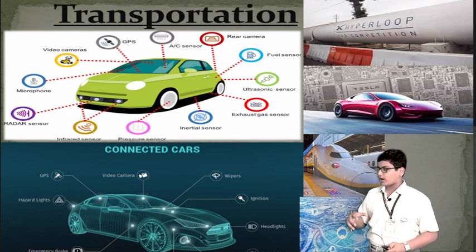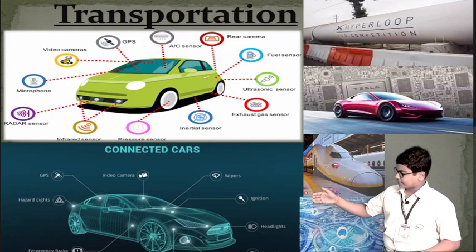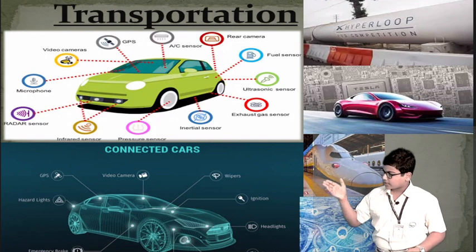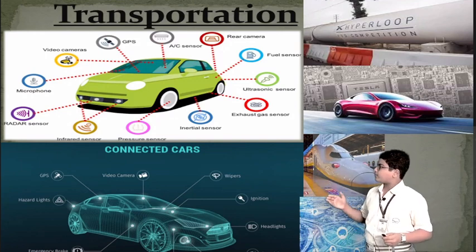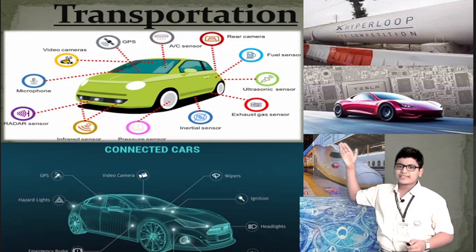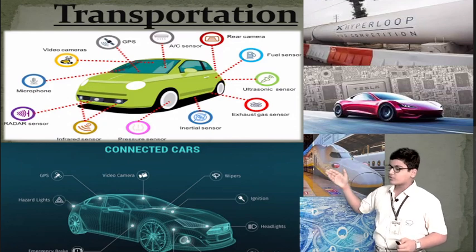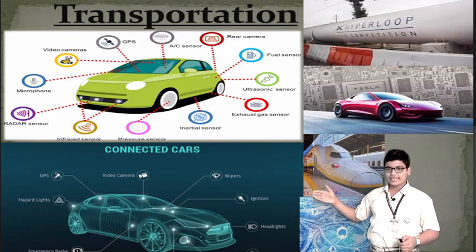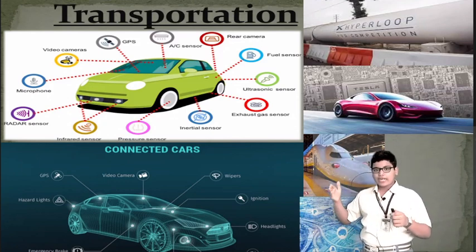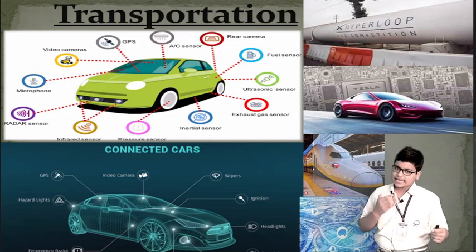It will also involve wipers, ignition headlights, fog lights, hazard lights, and many more. It will also develop the SpaceX Hyperloop, metro trains, bullet trains, digitalized vehicles, lightweight vehicle materials, and more.